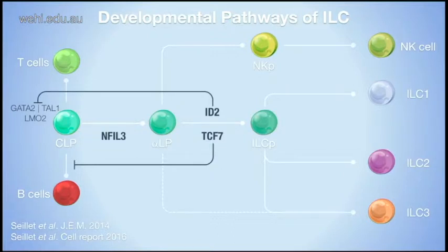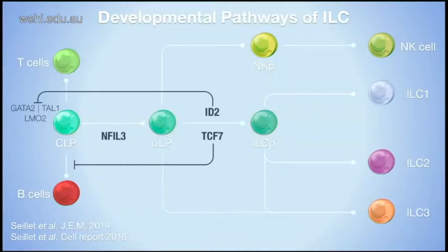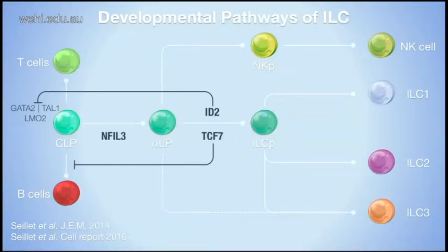These cells derive from the same progenitor as other lymphocytes — B cells and T cells — from the common lymphoid progenitor (CLP) in the bone marrow, giving rise to more restricted progenitors: first the αLP and then the ILC-P, which gives rise to all ILC subsets. We pioneered this field with Gabriel Bell's lab, contributing to identify this progenitor, and identifying important checkpoints where transcription factors N-FIL3, TCF7, and ID2 are critical for ILC lineage emergence.